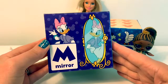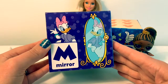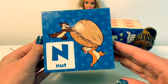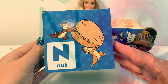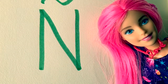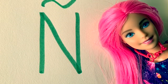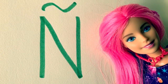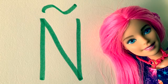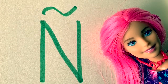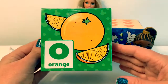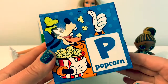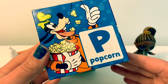M in Spanish is pronounced MA. N in Spanish is pronounced NA. The letter Ñ is also in the Spanish alphabet — it is an N with a little squiggly mark on the top, and that is called a tilde. O in Spanish is pronounced O. P in Spanish is pronounced PA.